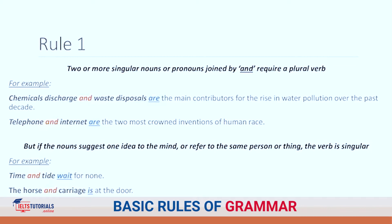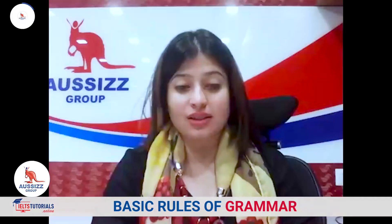However, if 'and' denotes the same person or same thing, then the verb is singular. For example, 'the poet and the critic was condemned' — here, the poet and the critic is one person. 'Time and tide waits for none' — referring to one concept. 'Horse and carriage is at the door' — the carriage cannot be without a horse. 'Bread and butter is my favourite' — I am referring to one breakfast dish.